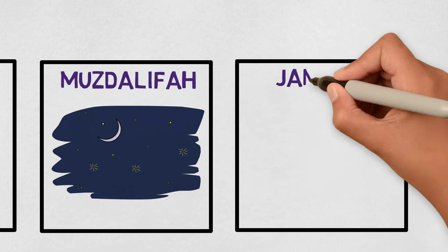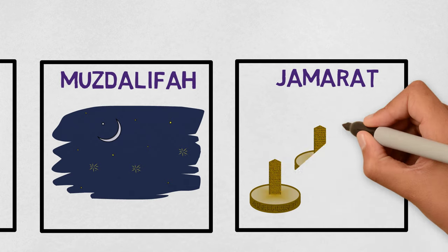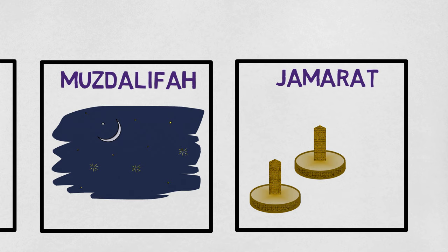The next day is back at Mina. Everyone throws stones at three large walls called Jamarat. These walls represent Shaytan and throwing stones at that wall is a sign that Muslims are rejecting Shaytan.